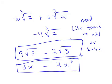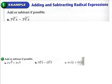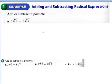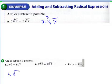Let's take a look at the first few examples — add or subtract if possible. Are these like terms? Yes — same index, same radicand, so you end up with 2 cube root x. Down here, are these like terms? Yes — 5 square root 7. Are these like terms? No — that's your answer. Are these like terms? Yes — both have square root xy, so you end up with 9 square root xy.